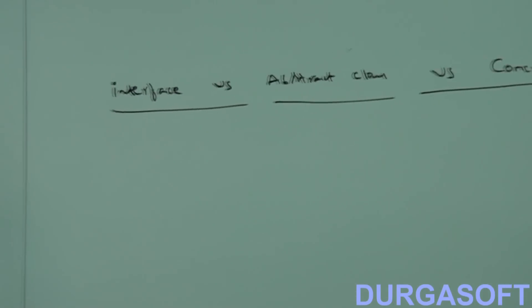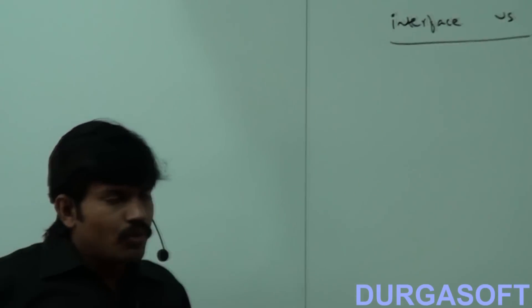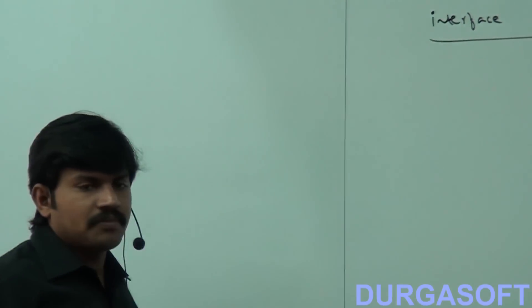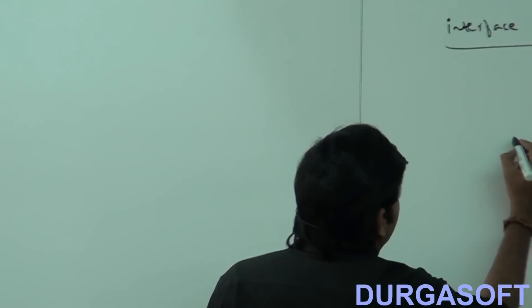It's very simple. If we don't know anything about implementation — just we have a requirement specification, just I have one requirement — to represent this, we should go for the interface concept. If we don't know anything about implementation and just have a requirement specification, then we should go for the interface concept.